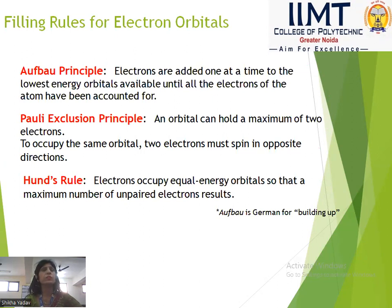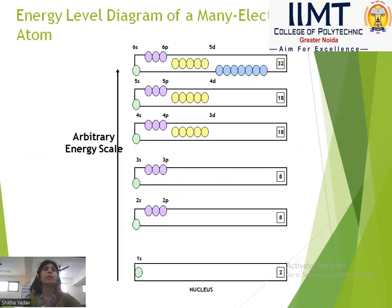Next we have Hund's Rule: electrons occupy equal energy orbitals so that the maximum number of unpaired electrons results. This is again illustrated by the energy level diagram for many-electron atoms.